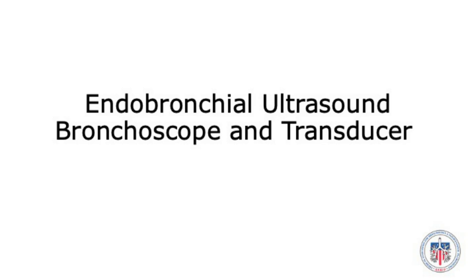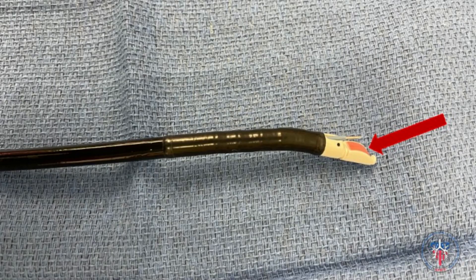Next we will review the features of endobronchial ultrasound bronchoscopes and transducers. The components of an endobronchial ultrasound scope include an ultrasound probe, which is highlighted by the red arrow.